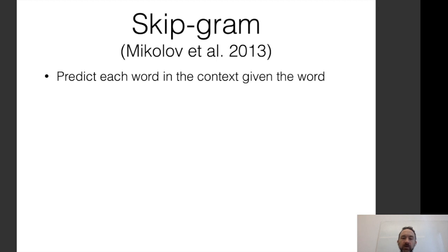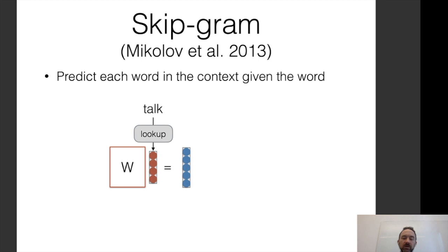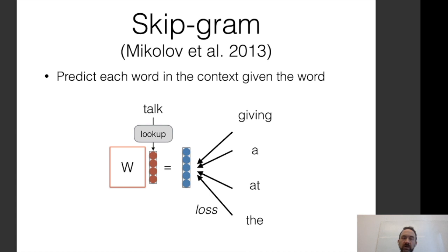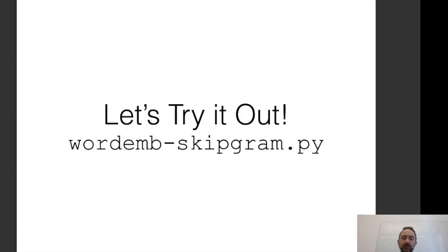Another model is the skip-gram model, which tries to predict each word in the context given the center word. We take the word, generate scores, and calculate the loss with respect to all surrounding words. This is less intuitive than predicting a single word, but one advantage is that it gives more feedback signal — signal from multiple surrounding words rather than just one — which can make it learn faster in some cases. It tends to be as good or better than CBOW, and may learn more rapidly.